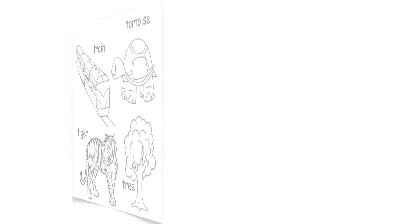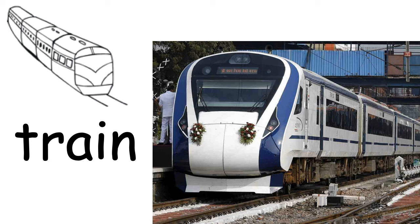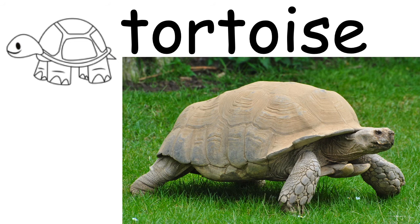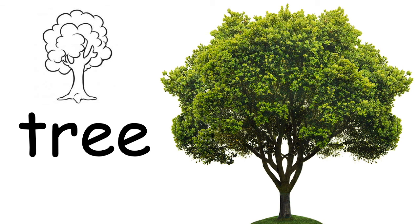Now take out the pictures beginning with the letter T and glue it at the top of the page. T as in train. T as in tortoise. Tortoise. T as in tiger. Tiger. T as in tree. Tree.